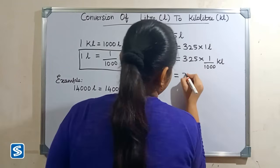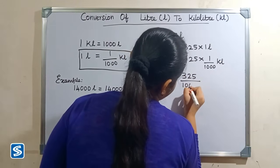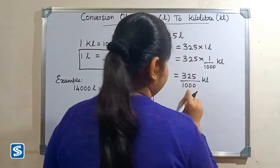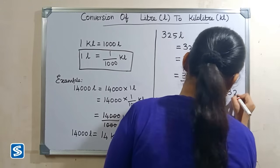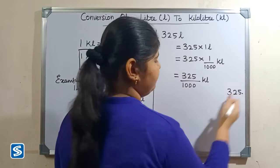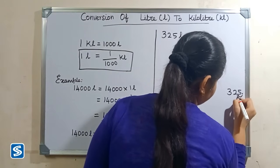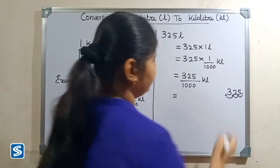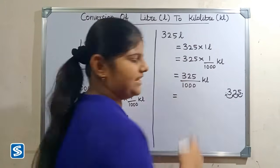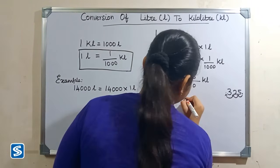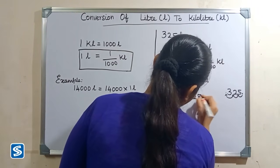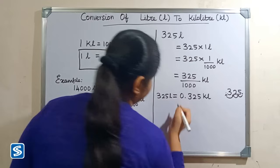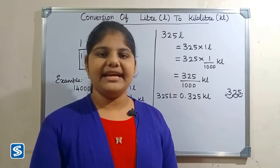Three hundred and twenty-five multiply one is three hundred and twenty-five, so we get 325 by one thousand kiloliters. The easy way to divide by one thousand is to move the decimal point three places to the left — one, two, three. So when we divide 325 by 1000 kiloliters, our answer will be 0.325 kiloliters. So 325 liters is equal to 0.325 kiloliters.